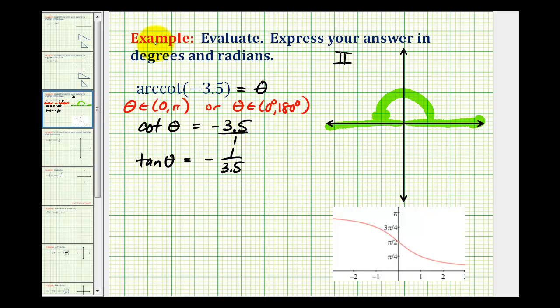And if this is true, then we could say that arc tangent of negative 1 divided by 3.5 must equal theta. And this is helpful because there is an arc tangent button on the calculator.